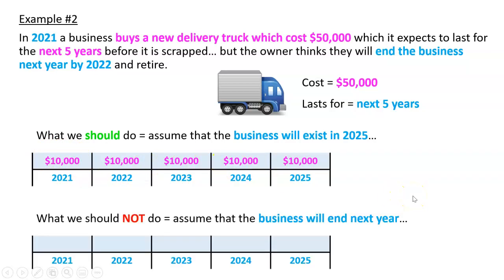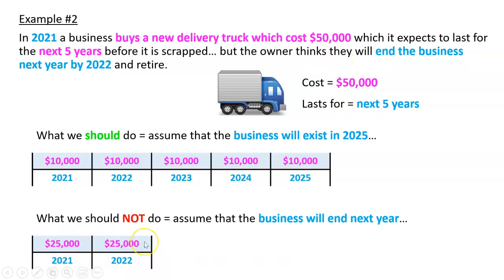What we shouldn't do is this: the owner thinks they're going to retire by 2022, so we shouldn't say it's a $50,000 truck, use it there and there, and then that's it. That doesn't make sense — it's not like the truck disappears. There's still a truck; we haven't used all of it. If we assumed the business was going to end after 2022, that's what we would be doing. We're going to assume we have this asset for the future, even if we're not the ones that own the business.